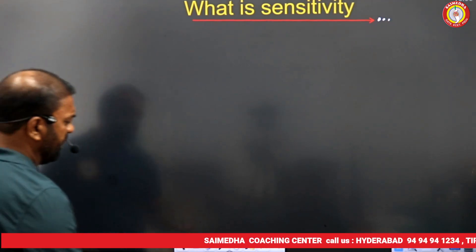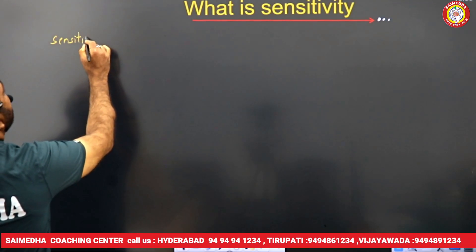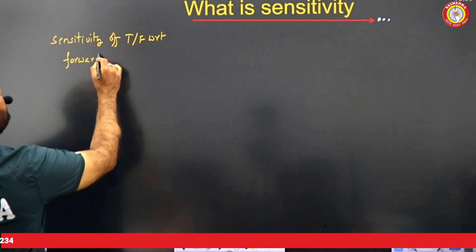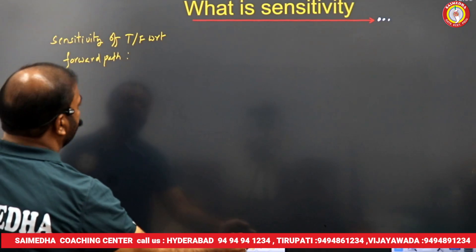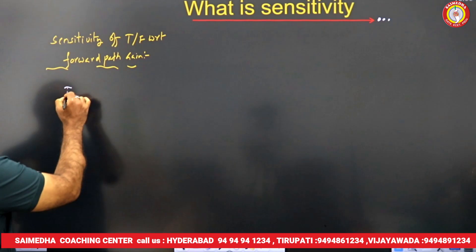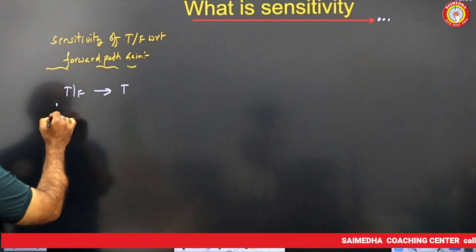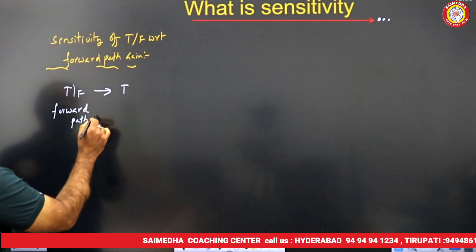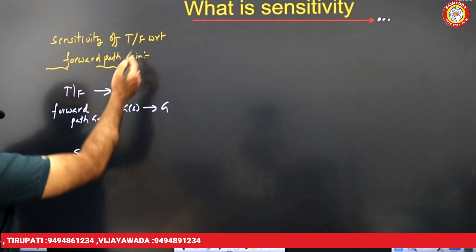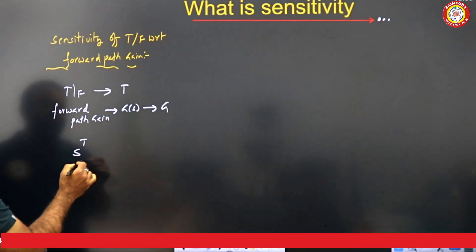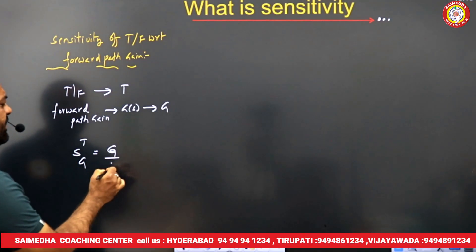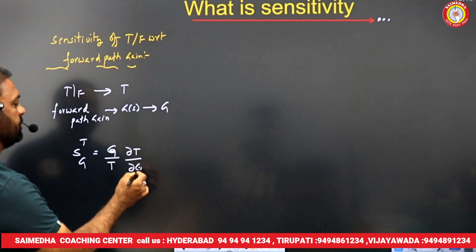My dear friends, what I am doing here: I will find the sensitivity of the transfer function with respect to forward path gain. I am representing transfer function as capital T, and forward path gain G(S) simply as G. Sensitivity of transfer function with respect to forward path gain, S_T^G, is read as: sensitivity of T with respect to G. It is (G/T) × (∂T/∂G).